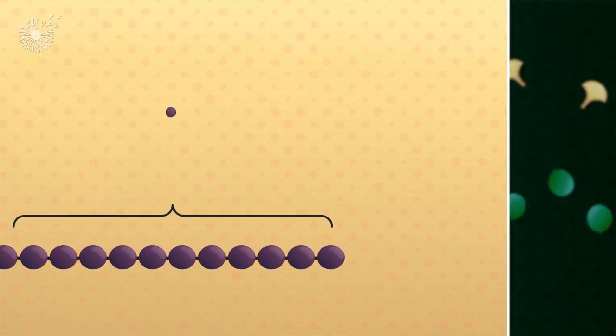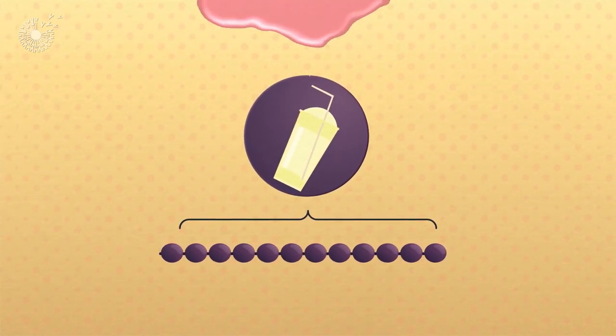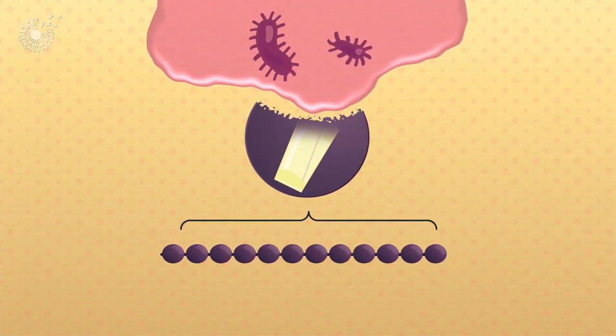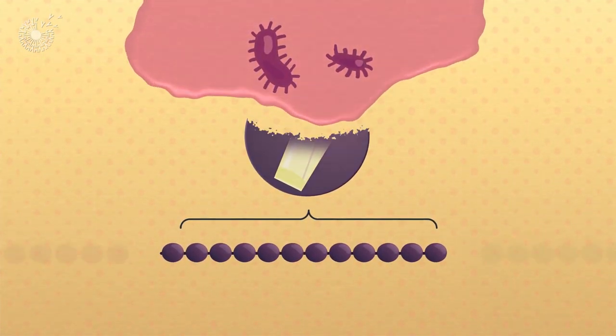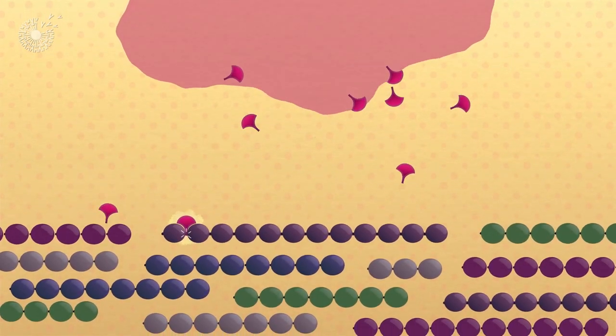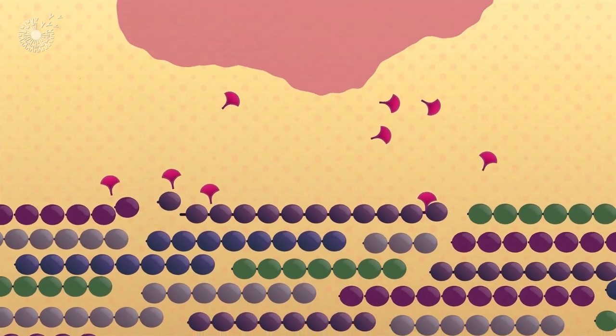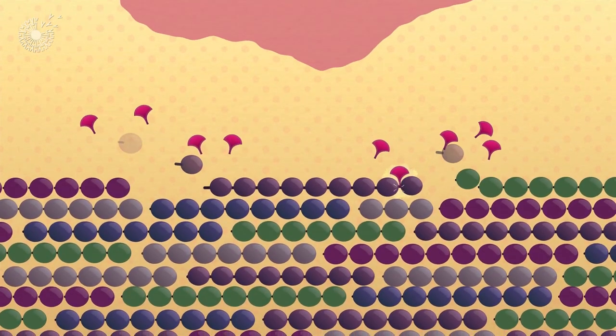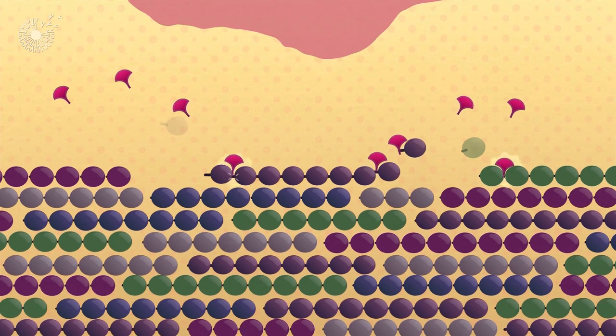Even the plastics humans produce are able to be broken down this way by microbes. But it's a really slow process. The microbes can attack only the surface of the plastics, and the polymer chains are bound so tightly together that only a few bonds are exposed for the enzymes to reach.